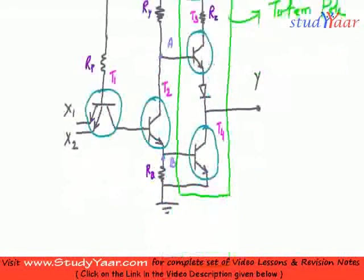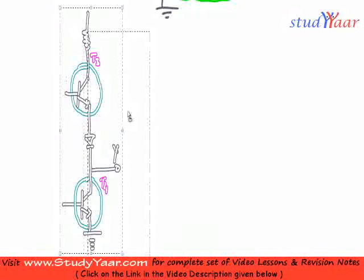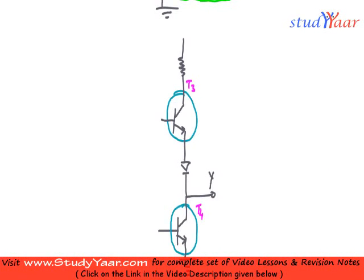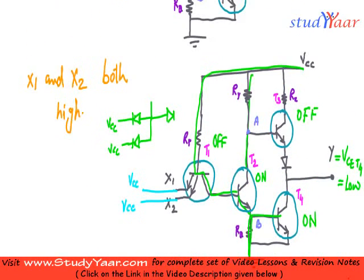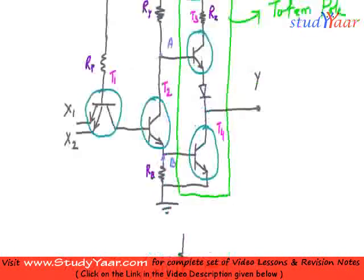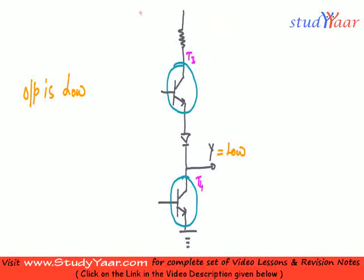Just look at this — let me have only this part. So only this part is something like this. Now let's see what happens when your output is low. We know that when the output is low, T3 is off and T4 is on.